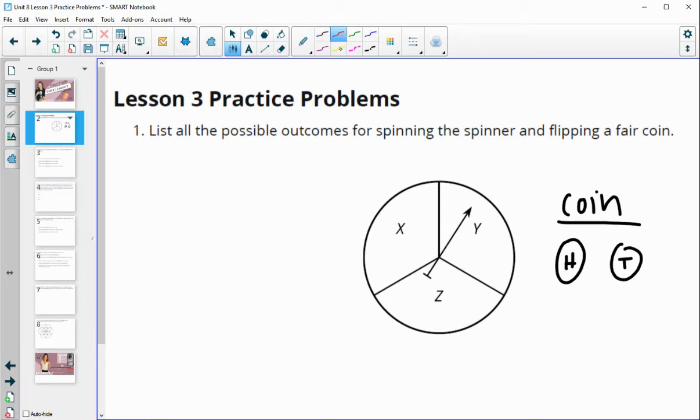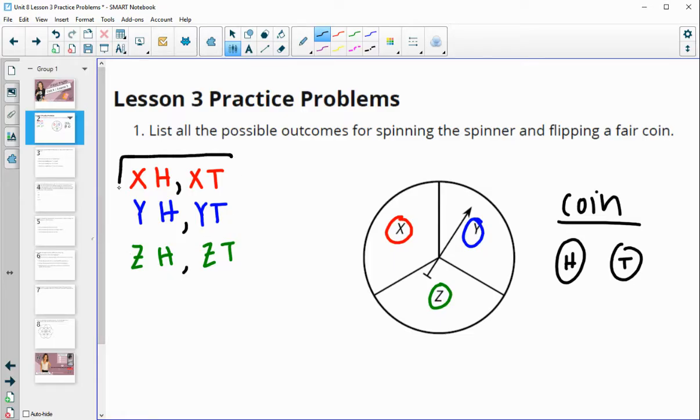And so what I do is start with one of the options. So I'm going to start with X and then I'm going to do it with each of the next two. So X and then I could do heads, if I spun X I could also get tails. Then I'm going to switch to Y and Y will go with either heads or with tails. Then I'll switch to the third spinner option and that is Z and Z could be with heads or Z could be with tails. And that would exhaust all of my options. So that's one way you could do it. So here's the sample space has six elements in it.